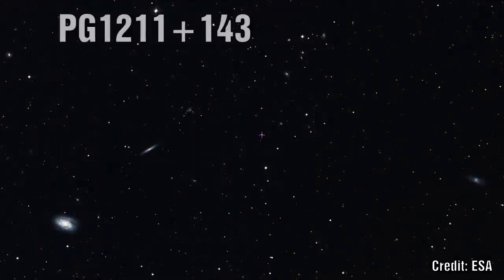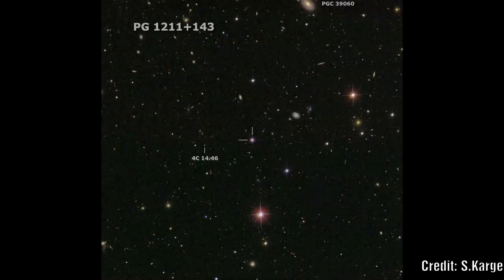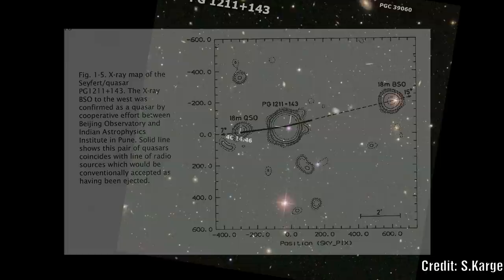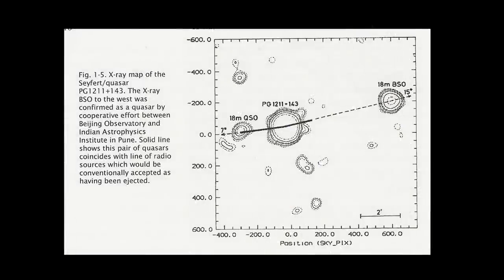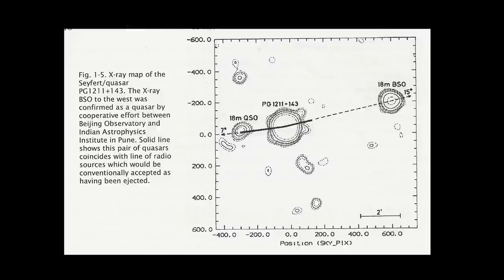PG 1211 plus 143. Now this contains a bright quasar that appears to have a line of radio sources passing through it and one of the radio sources is a higher redshift quasar. The central object is once more an active galaxy. So here we have a pair of quasars that are aligned with the radio source that are accepted to be ejected from the active galaxy. The redshift of both of these objects was again very similar.